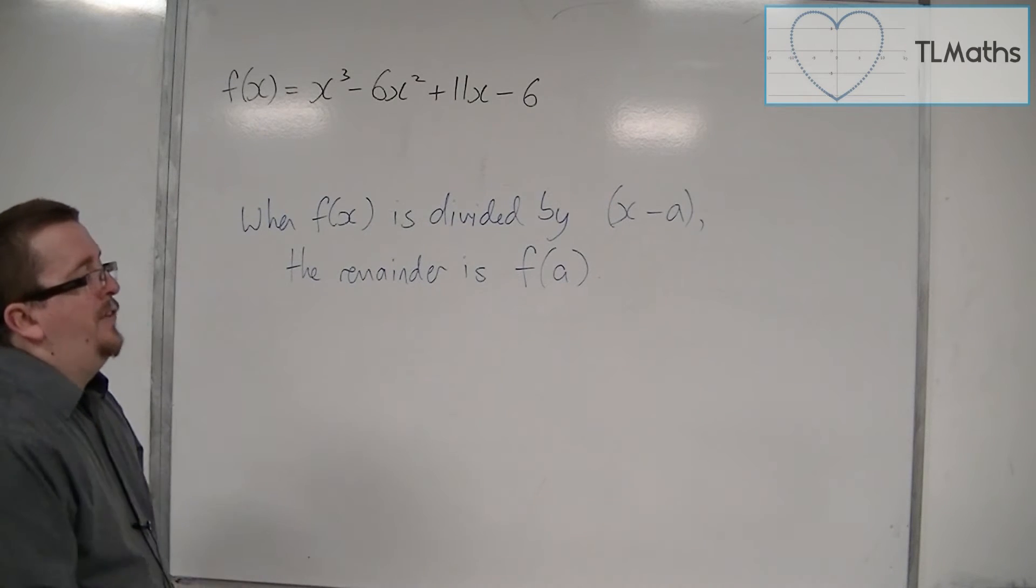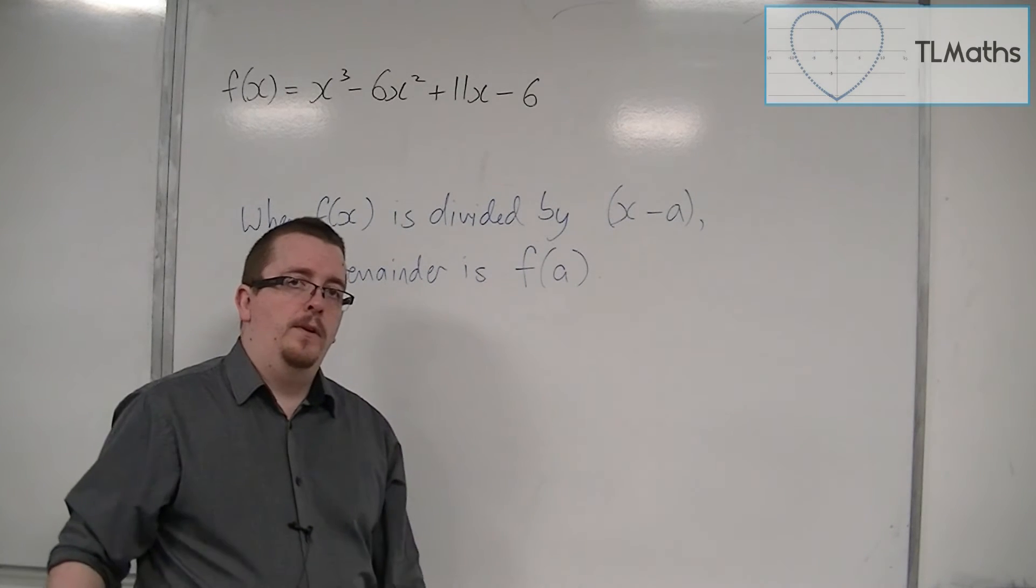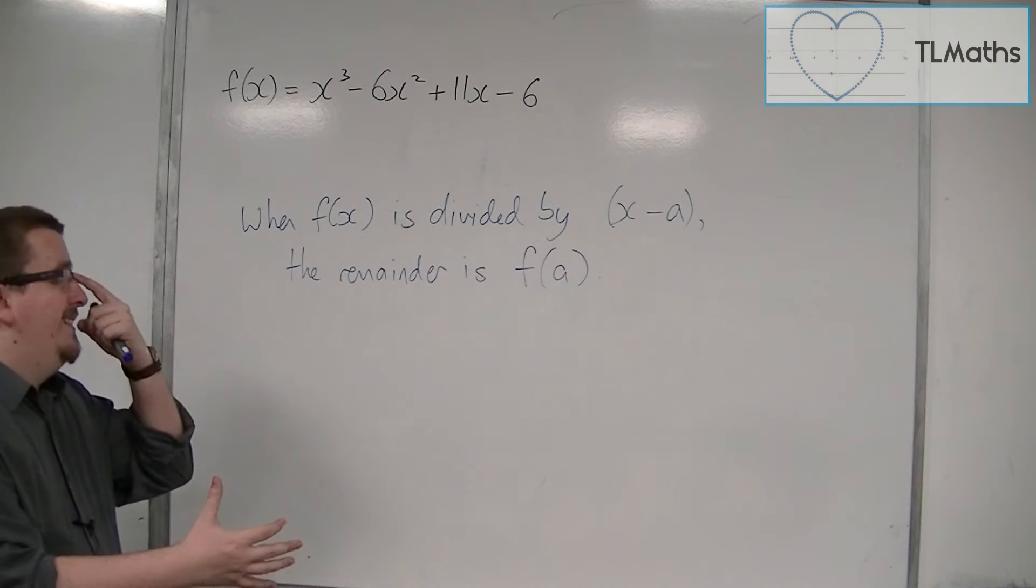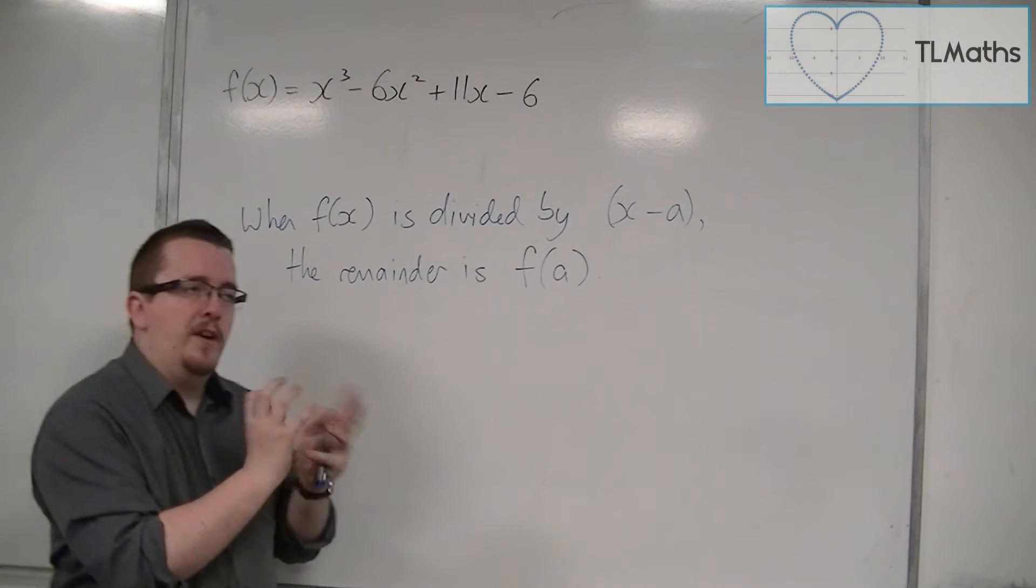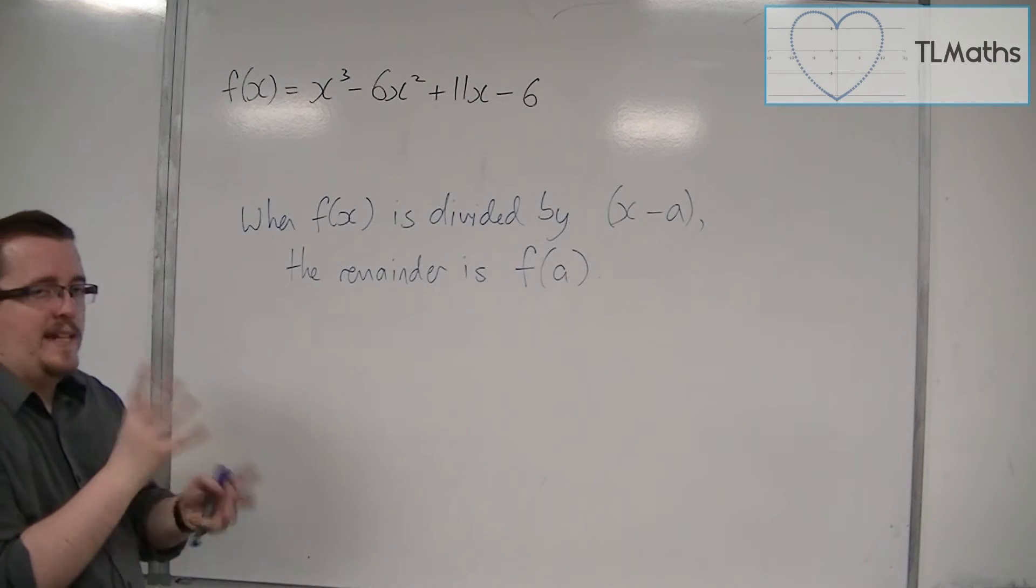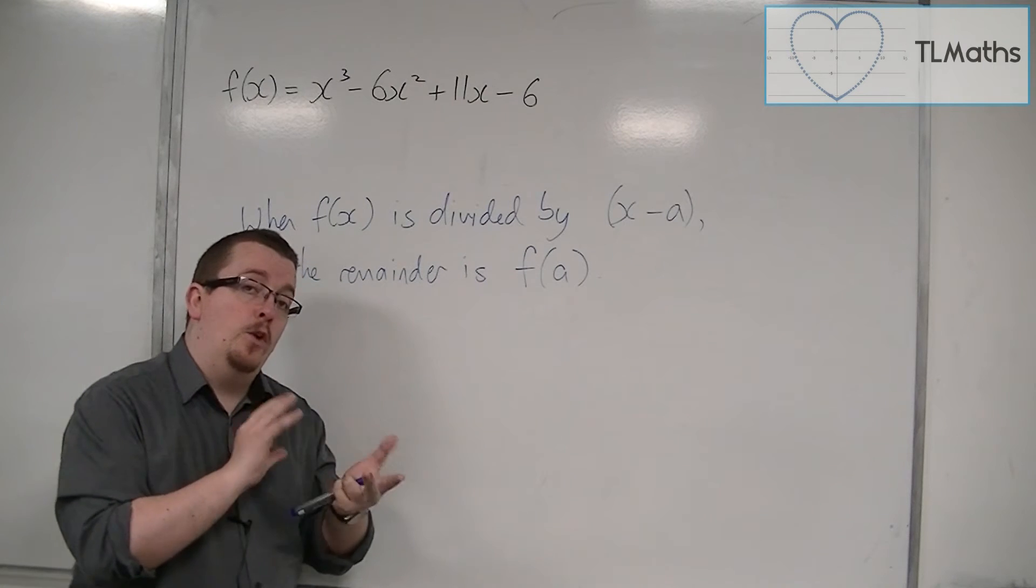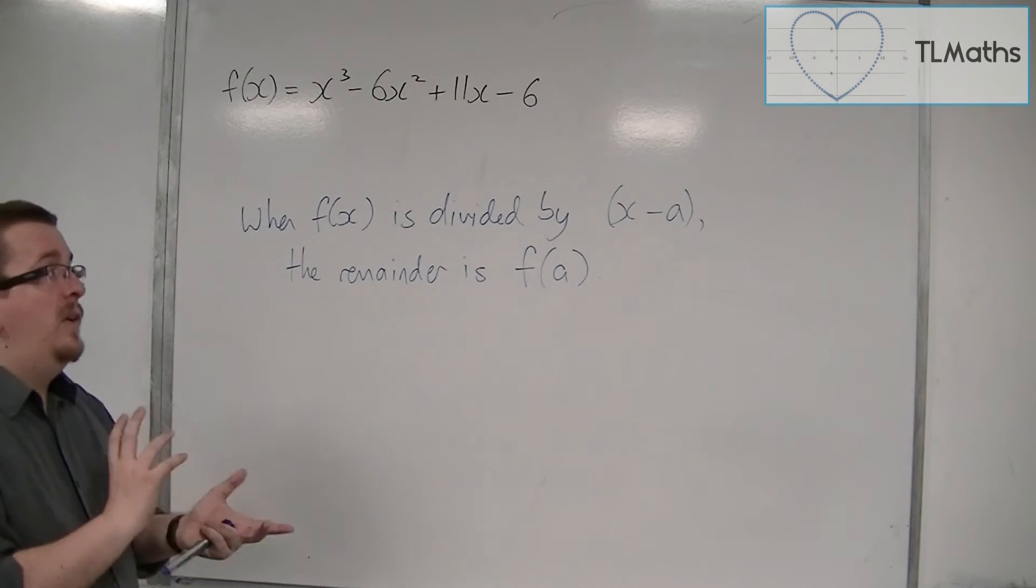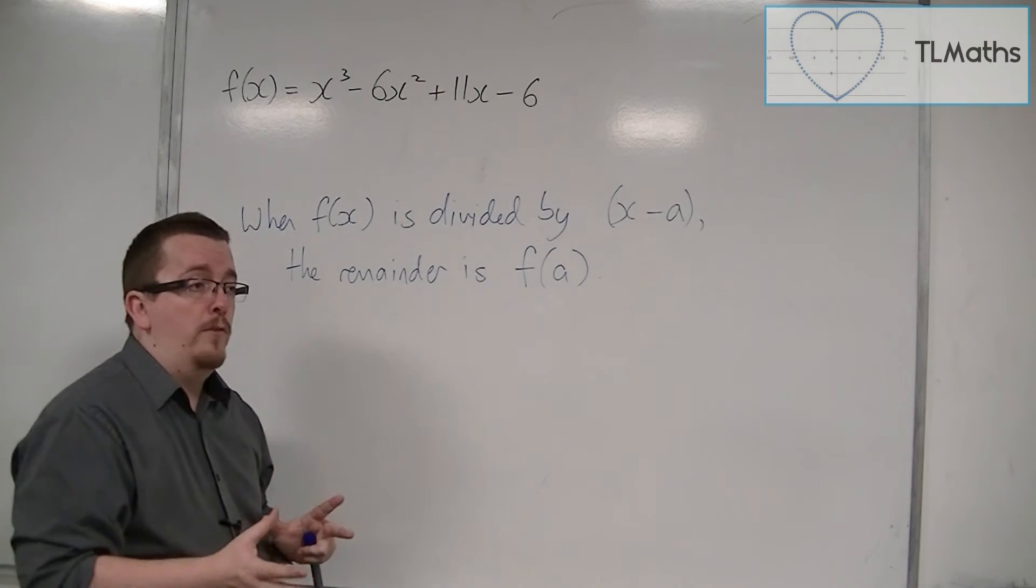The remainder theorem isn't a particularly useful bit of kit, but it goes alongside the factor theorem rather. They work in tandem because sometimes you're going to substitute numbers that will work and sometimes numbers that won't work. Some will equal 0 and some won't.